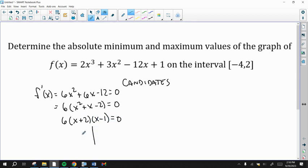So our critical numbers, two places that an absolute min or max can occur, are x equals negative 2 and x equals 1. So now we have actually four candidates: the two critical numbers and the two endpoints, negative 4 and 2.